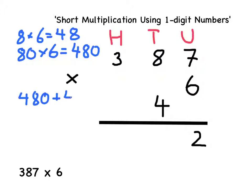What I've got to do with this 40 is add it on to the answer here. This means completing 480 add 40, which gives me an answer of 520.